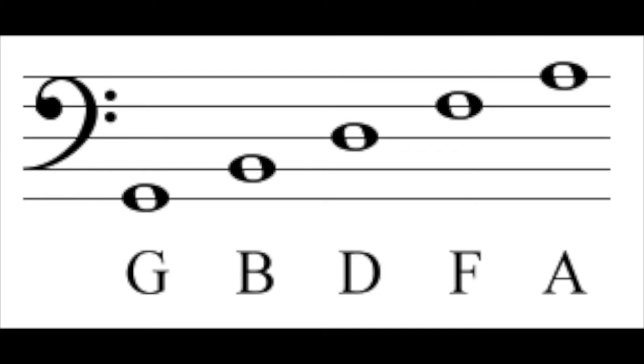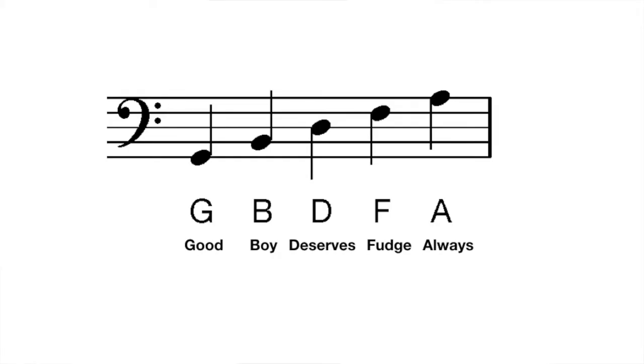The lines of the bass staff are G, B, D, F, and A. These can also be remembered with the memory tool: Good Boy Deserves Fudge Always.